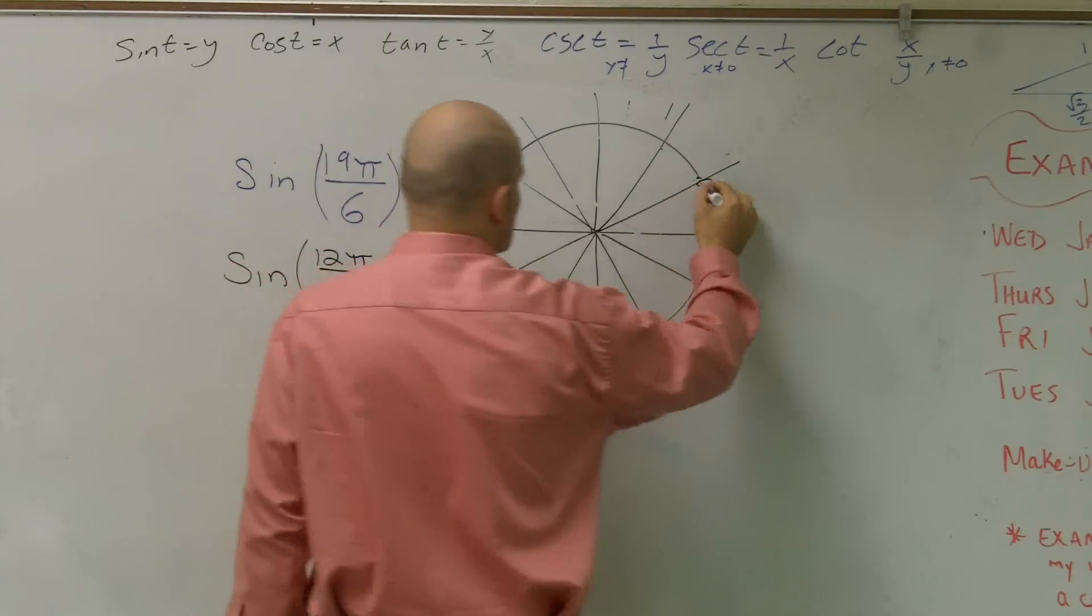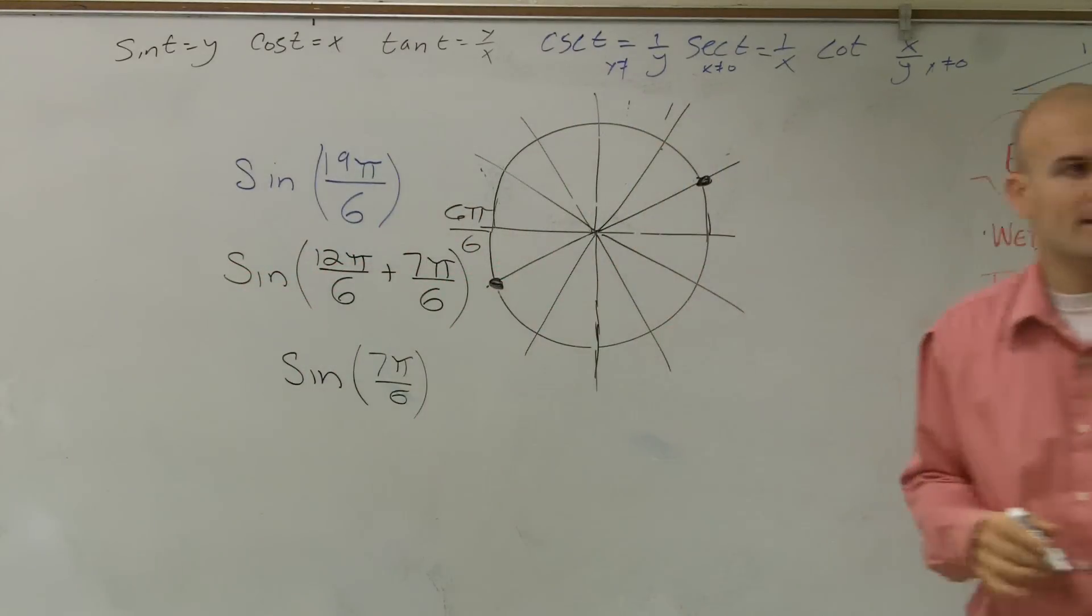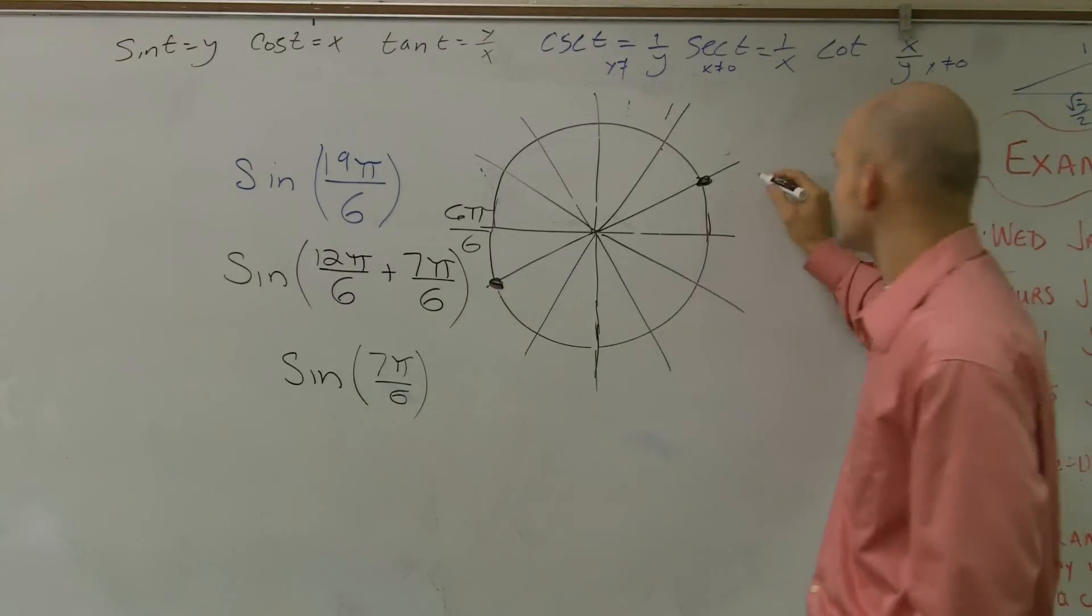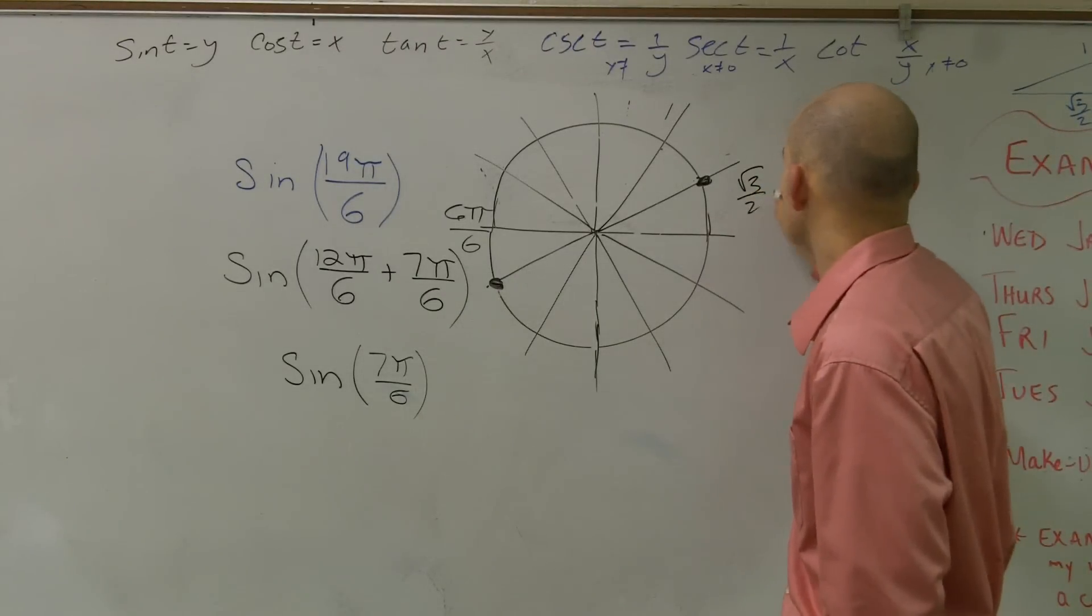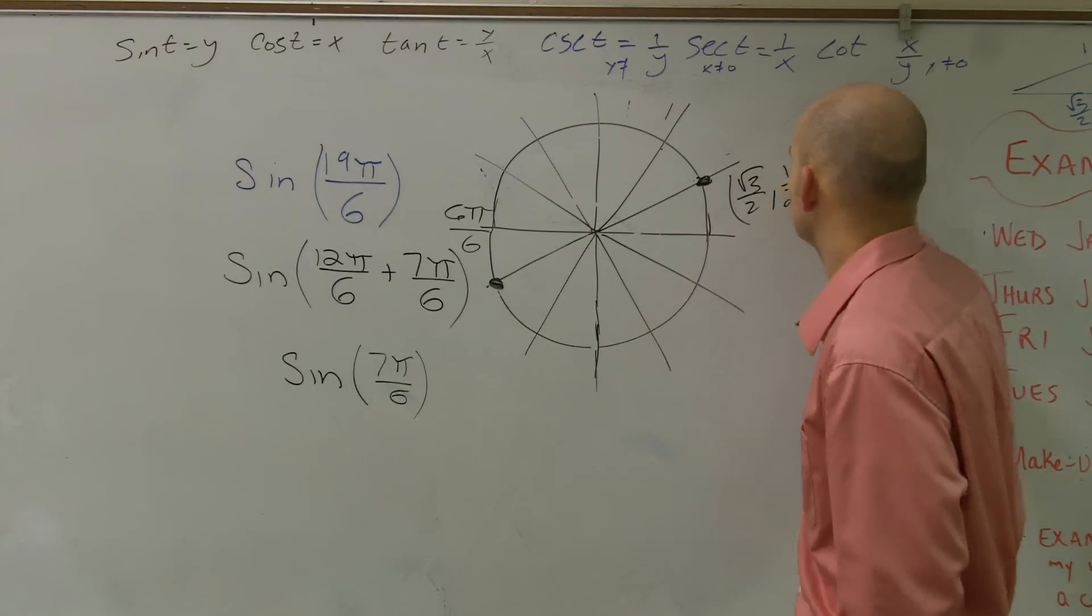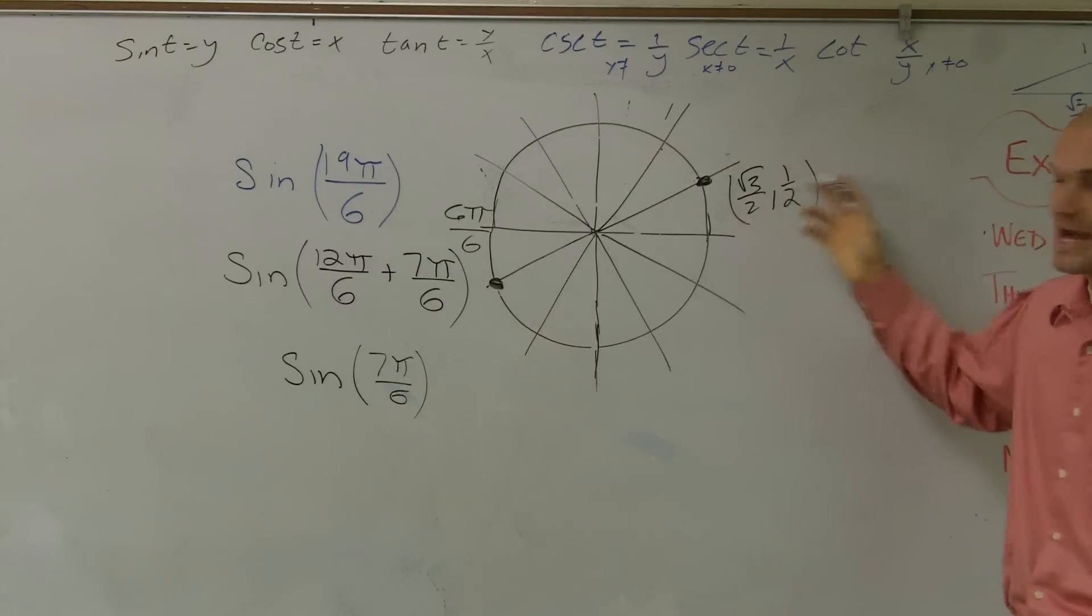I told you guys to memorize what this point is. What is π over 6? And that's going to be square root of 3 over 2, comma, 1 half. So that's my x and y coordinate.